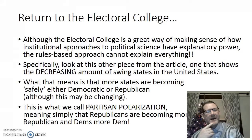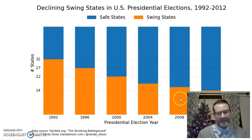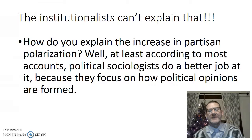Returning briefly to the Electoral College: rules alone can't explain everything, specifically what we call partisan polarization — Republicans becoming more Republican and Democrats more Democratic. We see a decrease in the number of swing states. The rules don't explain that. We need a cultural explanation to say why states are sorting themselves more and more into one party.